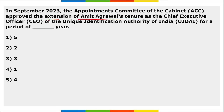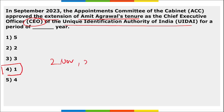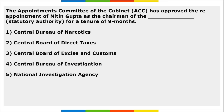The ACC approved the extension of Amit Agarwal's tenure as CEO of UIDAI for a period of one year, from 2nd November 2023 to 2nd November 2024. ACC also approved the reappointment of Nitin Gupta as chairman of CBDT (Central Board of Direct Taxes) for nine months.